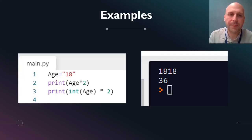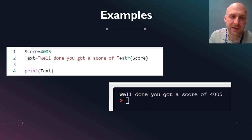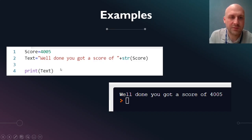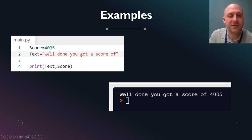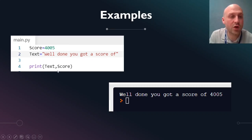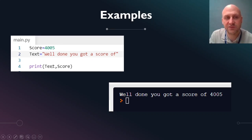Now, earlier I showed you this one. And you might have said to yourself, well, can't I just do print text comma score? Because that will work — and it does. The only thing with comma is when you do that: I'm printing a string, doing a comma — because with comma you can put comma between variables and it will print them out. I don't have to turn that into a string, because I'm just going to put a comma, do the other variable, and then I can do a comma and another message.